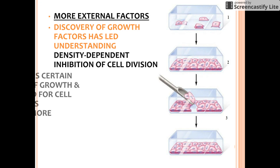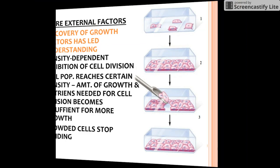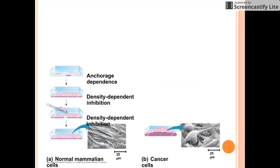In the graphic, you can see cells dividing until they reach their maximum density and are all touching each other. Then when some are removed, they fill in that spot and again quit dividing — crowded cells stop dividing. Most animal cells also exhibit this behavior.